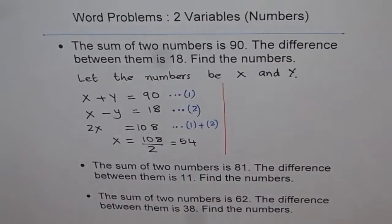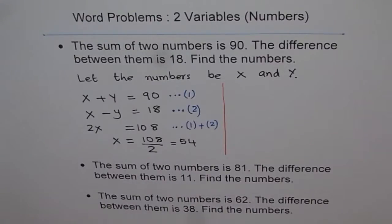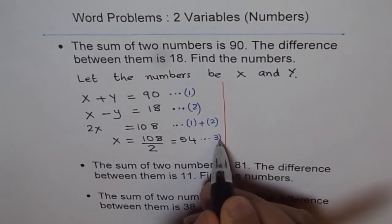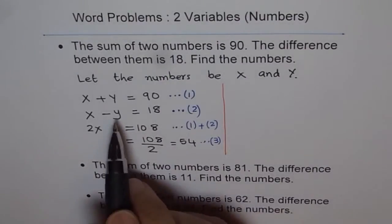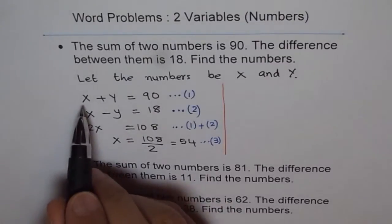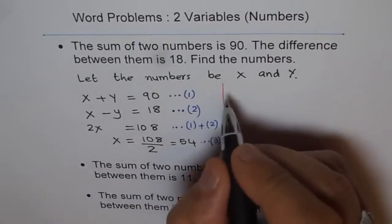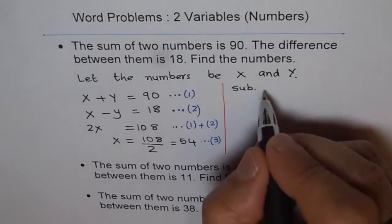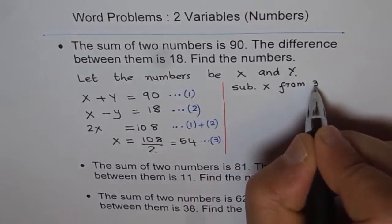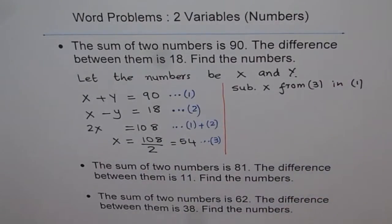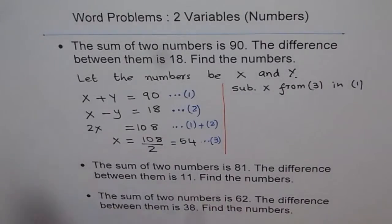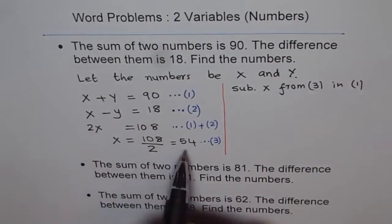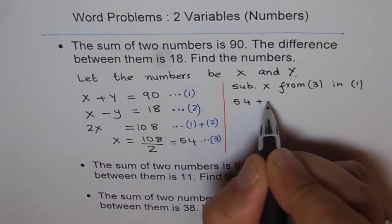You got the answer for one variable — half the problem is complete. Now to find Y, we go back to our equations. Call X equals 54 equation 3. To find Y, substitute the value of X from equation 3 into equation 1. Equation 1 is X plus Y equals 90, so substitute 54: 54 plus Y equals 90.